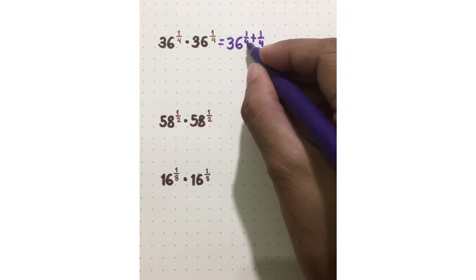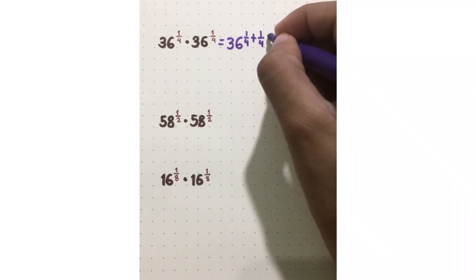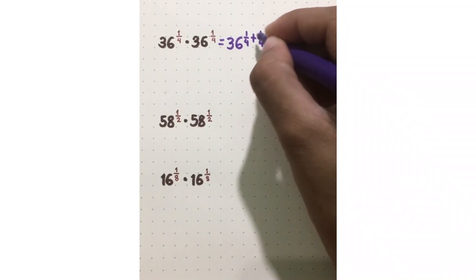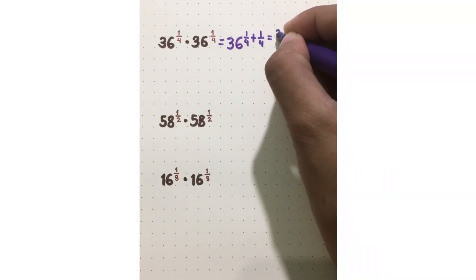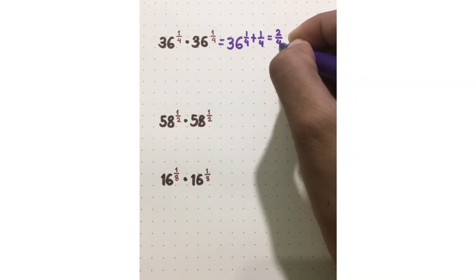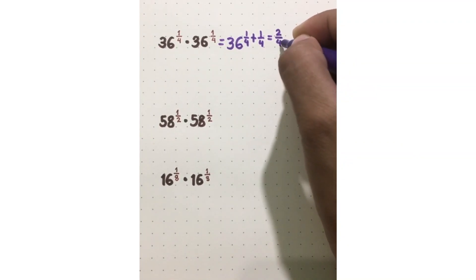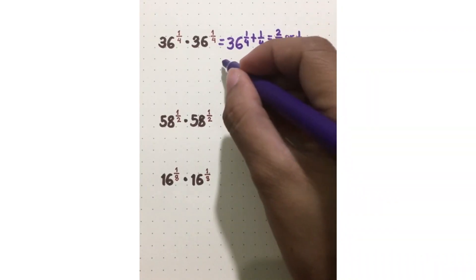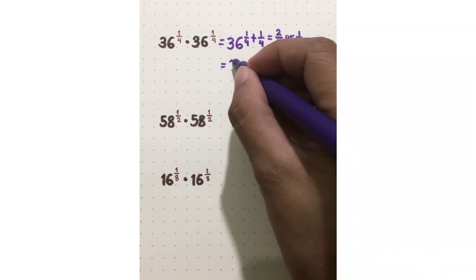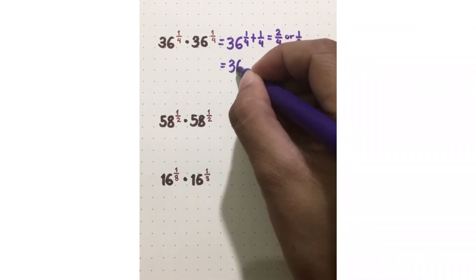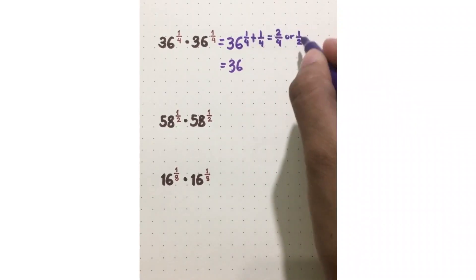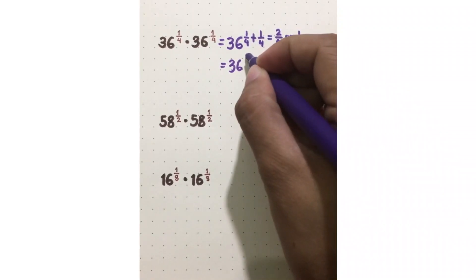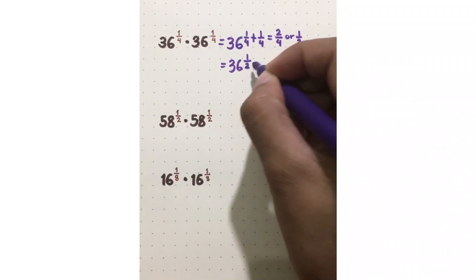Now add their exponents. Since they are similar fractions, you may just add the numerators: 1 plus 1 is 2, then copy the denominator 4. So 2 over 4 can be simplified as 1 half. Therefore, it will be 36 raised to 1 half, since 1 fourth plus 1 fourth equals 1 half.